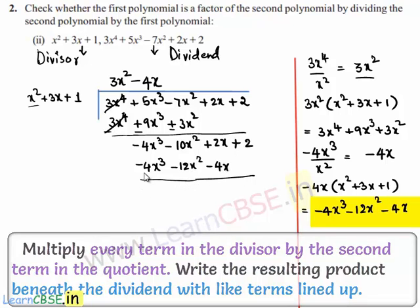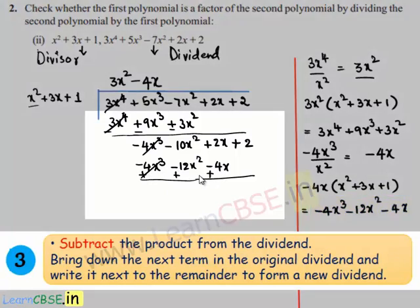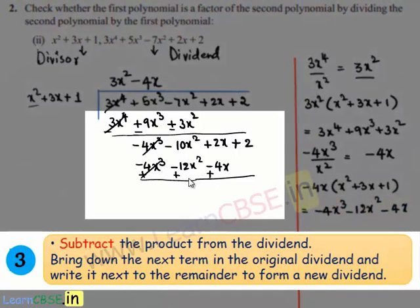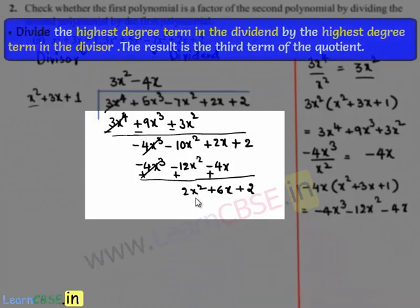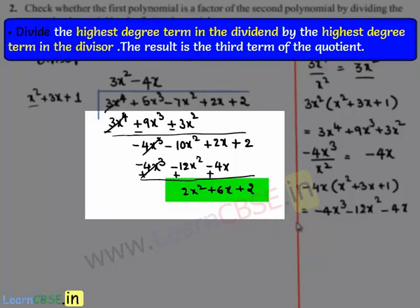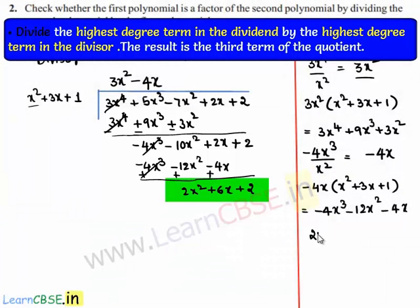Now let us subtract. Minus 4x³ and plus 4x³ cancel. Minus 10x² plus 12x² gives 2x². 2x plus 4x gives 6x, and this is plus 2. So now the new dividend is 2x² plus 6x plus 2.